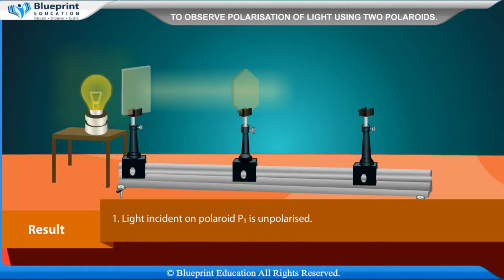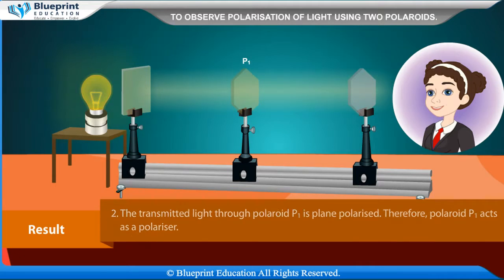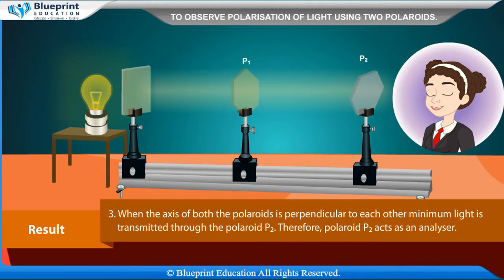Result. Light incident on Polaroid P1 is unpolarized. The transmitted light through Polaroid P1 is plane polarized. Therefore, Polaroid P1 acts as a polarizer. When the axis of both the Polaroids is perpendicular to each other, minimum light is transmitted through Polaroid P2. Therefore, Polaroid P2 acts as an analyzer.